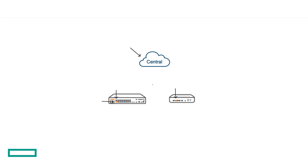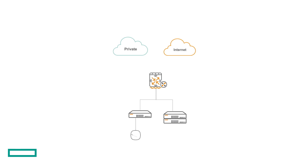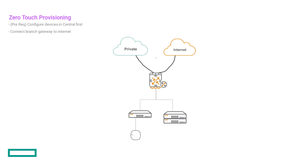With that being said, how do you configure the rest of the branch, or ZTP the rest of the branch? Before I talk about ZTPing the rest of the branch, let's recap ZTPing just the gateway. We have two circuits here — we have a private circuit, MPLS in this example, and then we have an internet circuit. We're going to connect up to that internet circuit, get DHCP, get onboarded, and get the rest of our configuration. You can also connect up to this MPLS circuit and have your configuration for this port in your final configuration within Aruba Central — you get your MPLS config by getting your final configuration from Aruba Central.